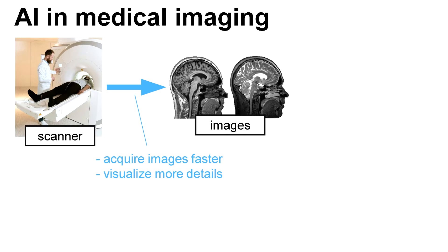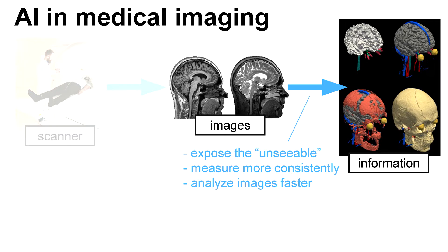Chances of accidentally moving while taking the images are decreased. And you just get much better images — higher resolution, less noise. I'm not going to talk about that part of AI. What I will talk about is another phase: starting from existing images to extract useful information.